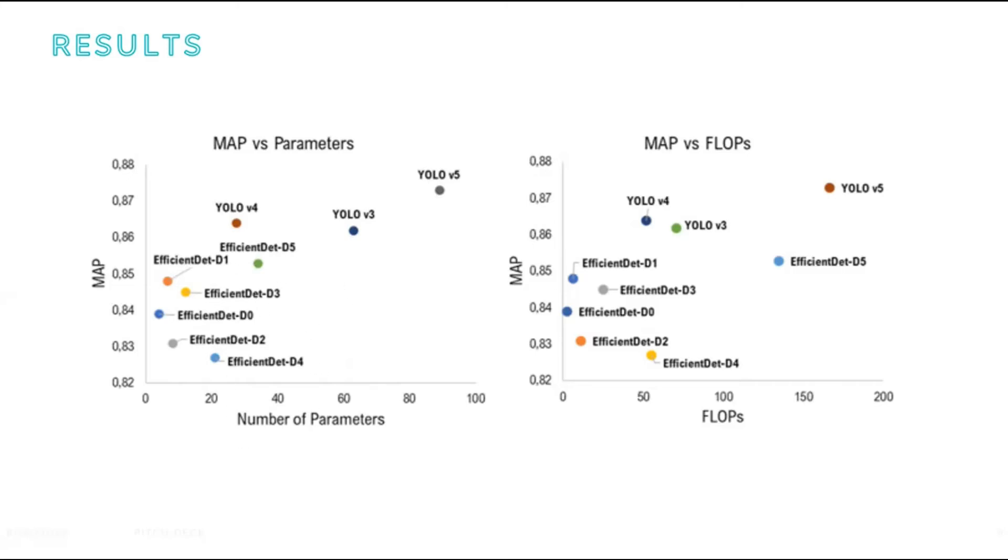EfficientDet is another generation of object detection models published by Google research team, and they are quite light and efficient as well. If you look at this particular table, you can see that YOLO version 5 gave us the best results.